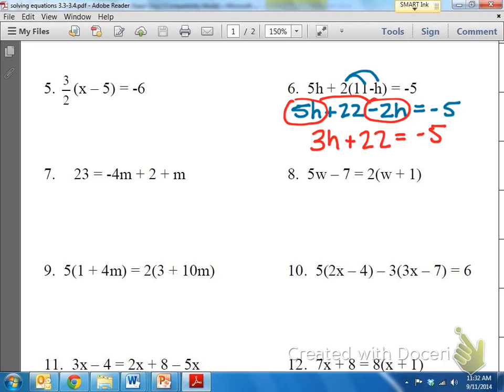And nothing else changes. Plus 22 equals negative 5. Again, because the variables were on the same side of the equal sign, I just follow what the signs say.